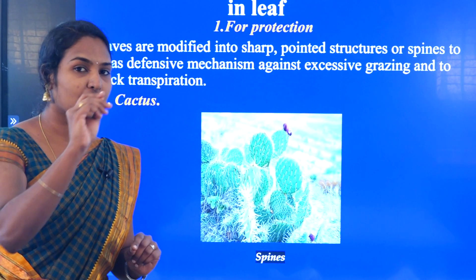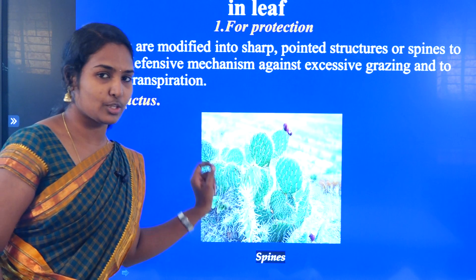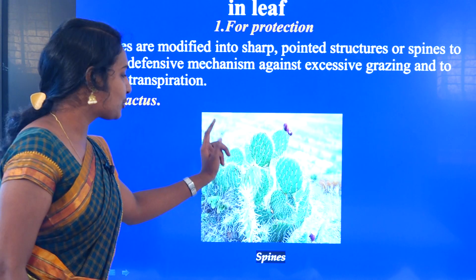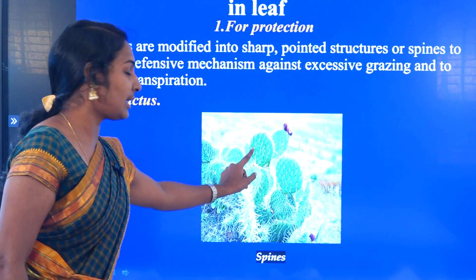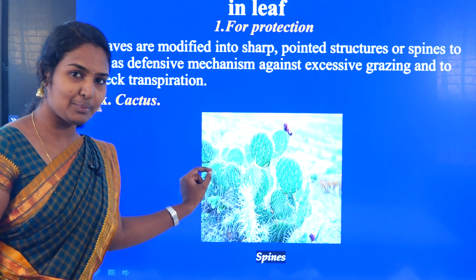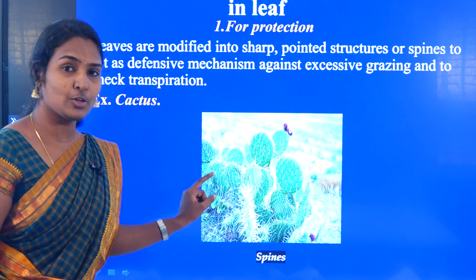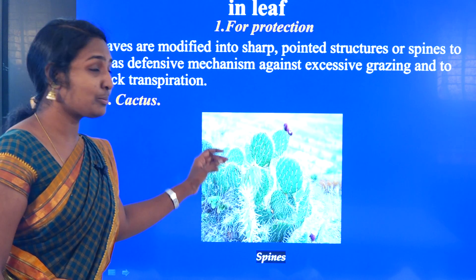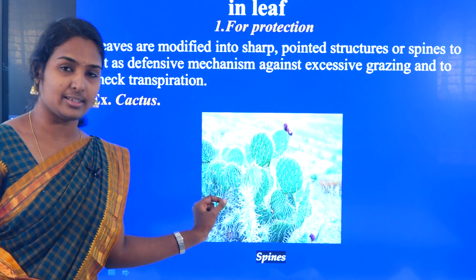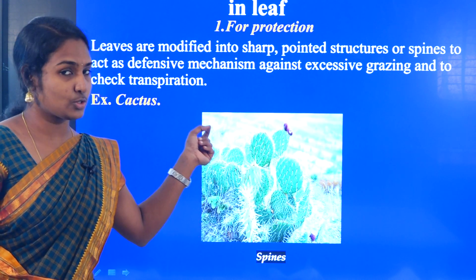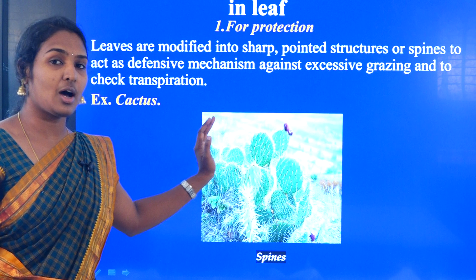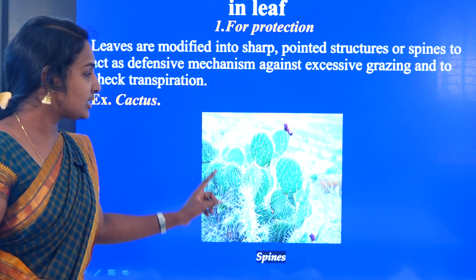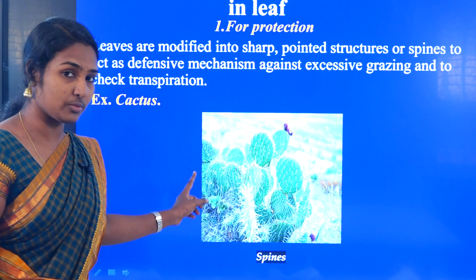The stem is modified so that a leaf-like structure is formed. The leaf is modified like a spine. This helps for the defensive purpose — when animals try to feed on the plant, the spines protect it. So for protection, the plant has spines. This is one modification.